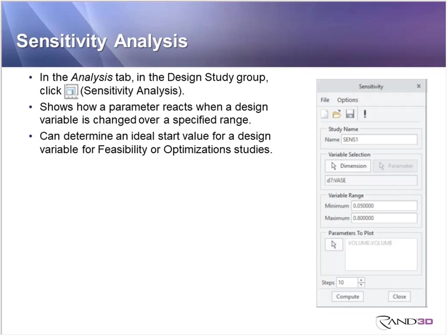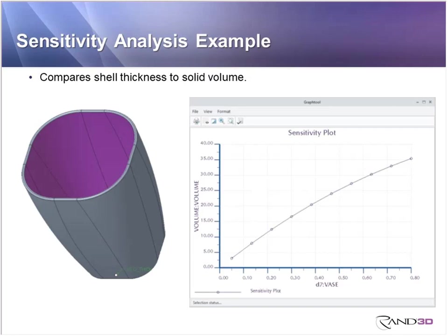One behavioral modeling study is the sensitivity analysis. It draws a graph showing how one parameter changes as a second one changes, revealing the relationship between them — is it linear, and what slope? You pick two parameters and it plots them. For example, plotting the volume of a container as wall thickness changes on the horizontal axis shows how the volume of solid material changes as wall thickness is edited.